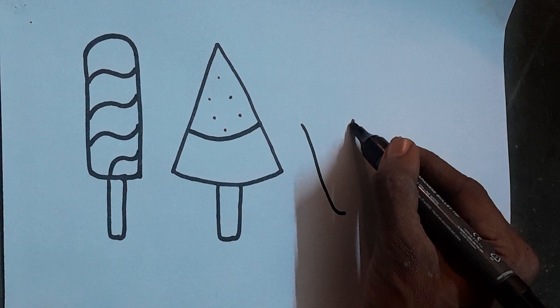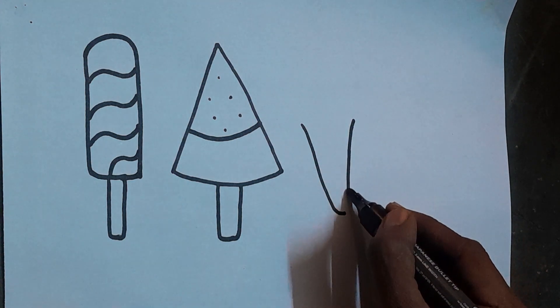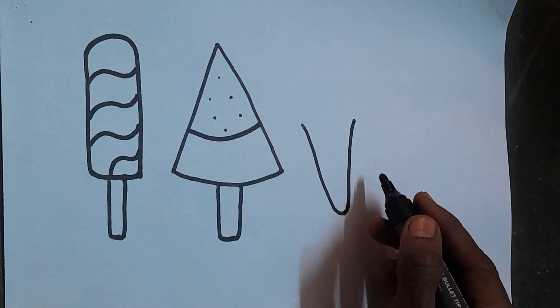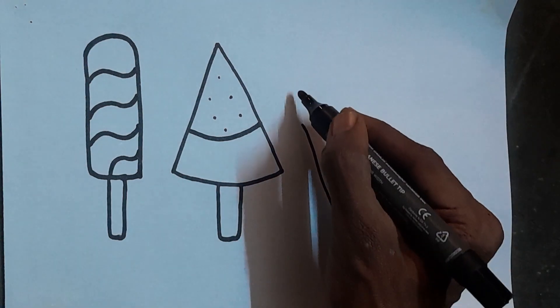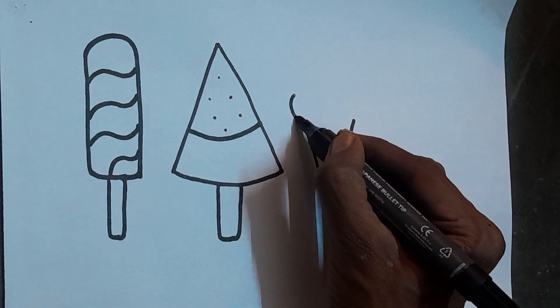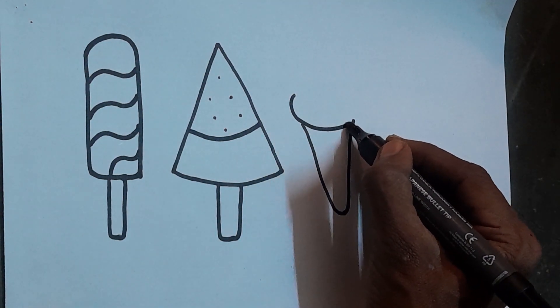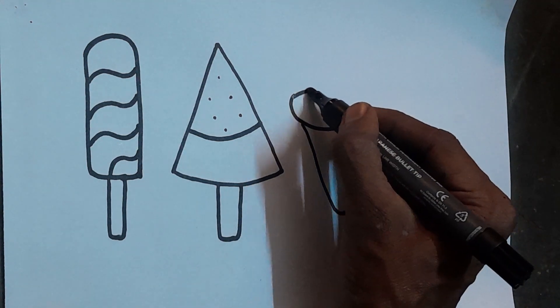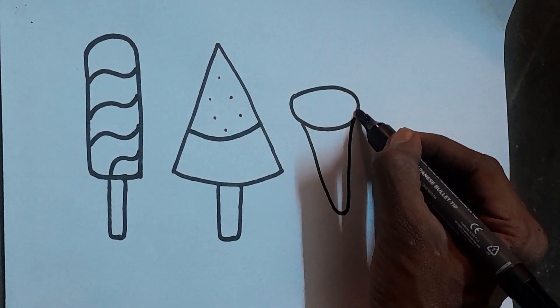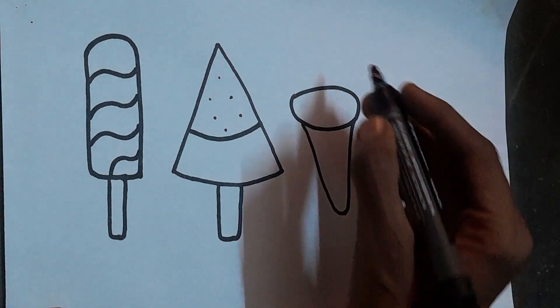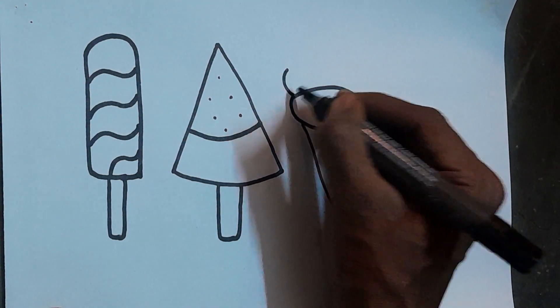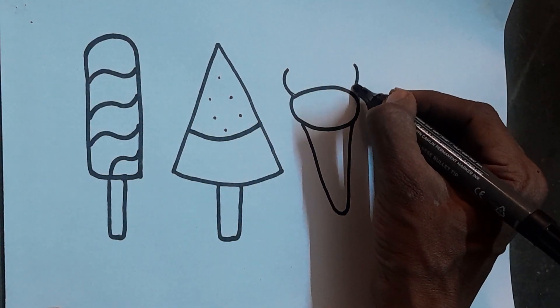Five, six, seven, eight, nine, ten. One, two, three, splashing in the sea. Four, five, six, naughty little chicks. Seven, eight, nine, swinging on the vine.